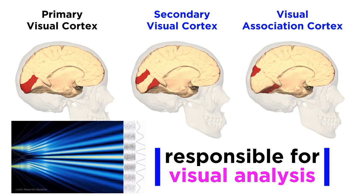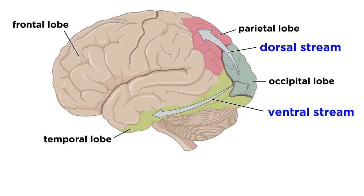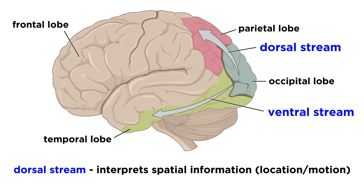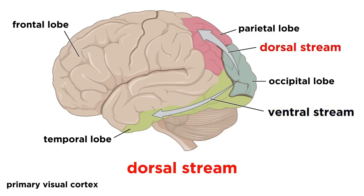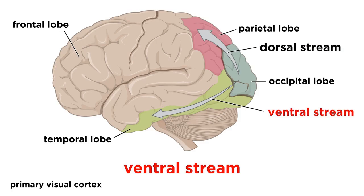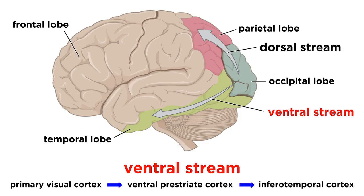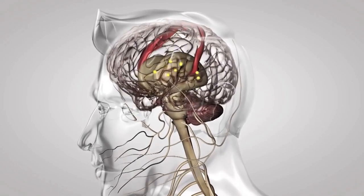The secondary and association cortices are responsible for visual analysis — the interpretation of information brought to the primary cortex. This information travels via the dorsal stream and the ventral stream. Roughly speaking, neurons in the dorsal stream interpret spatial information like the location of an object and its motion, while the ventral stream handles object characteristics like color and shape. The dorsal stream flows from the primary visual cortex to the dorsal prestriate cortex to the posterior parietal cortex, while the ventral stream flows from the primary visual cortex to the ventral prestriate cortex to the inferotemporal cortex. There is much more to discuss regarding how the brain processes visual information, which will be elaborated on in the future.